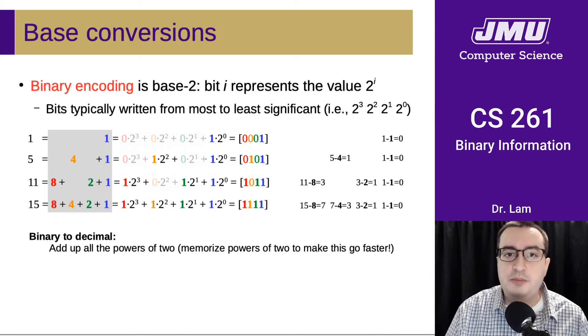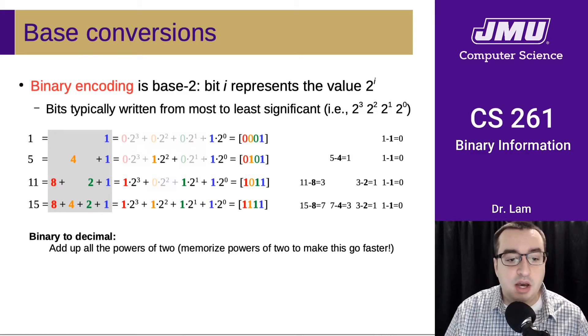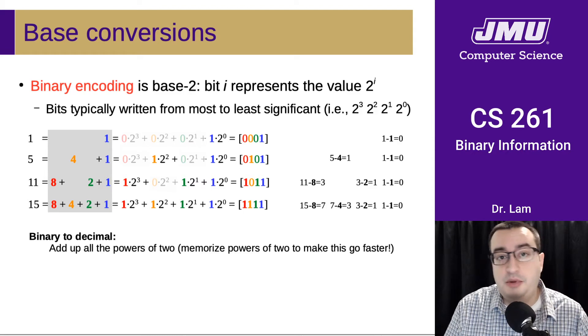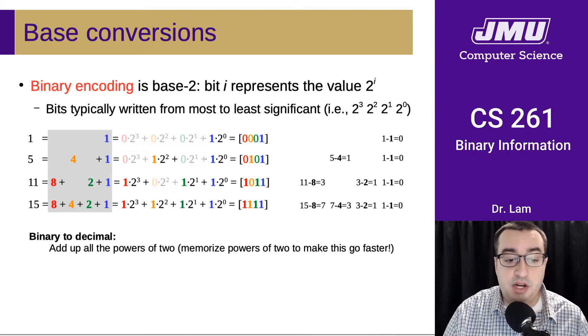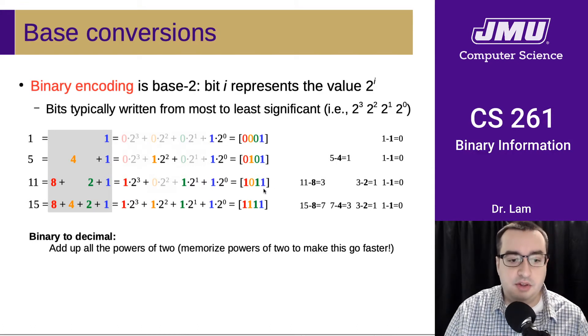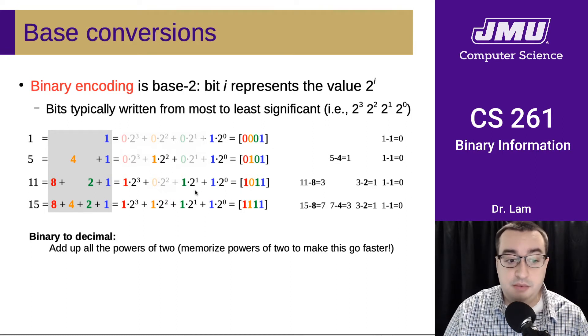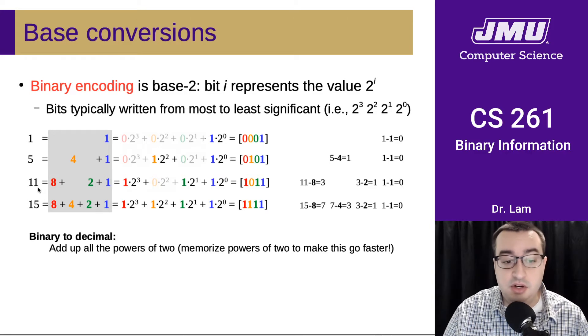To convert from binary to decimal, you just add up all the powers of 2. You look at the binary number, and I work from right to left because I find it easier. So this is a 1, we have a 2, we add those together to get 3, we don't have a 4, but we do have an 8. So we take 8 plus the 3 we had before and get 11.